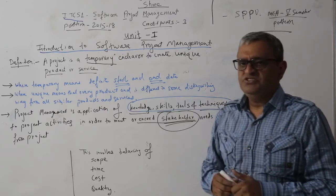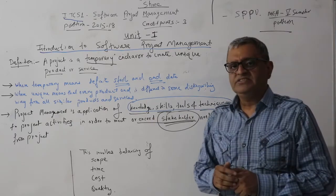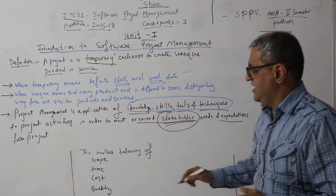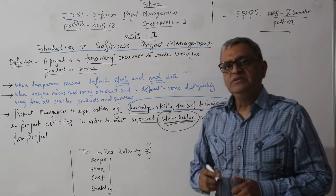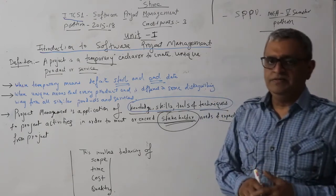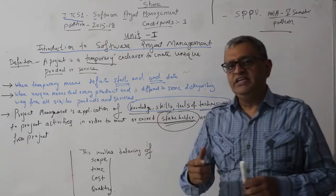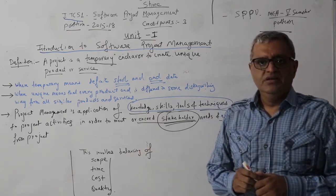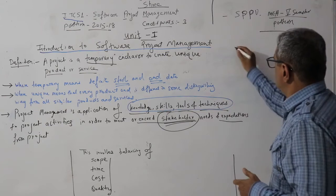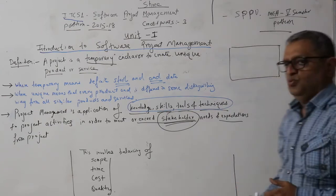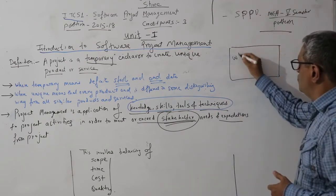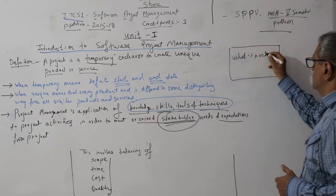Project management is not an easy task. It involves balancing between scope, time, cost, and quality. Scope is something which defines what is needed — what is needed in the project.